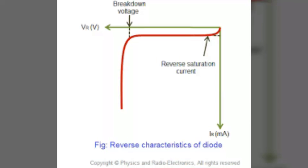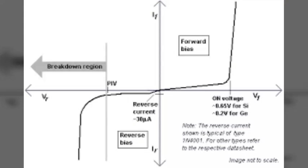Under reverse bias, the potential barrier at the junction is increased, therefore the junction resistance becomes very high and practically no current flows through the circuit. A very small current flows with reverse bias due to minority carriers, called reverse saturation current. If reverse voltage is increased continuously, the kinetic energy of electrons may become high enough to knock out electrons from the semiconductor atoms. At this stage, breakdown of voltage occurs. The breakdown voltage is the minimum reverse voltage at which the P-N junction breaks down with a sudden rise in reverse current.